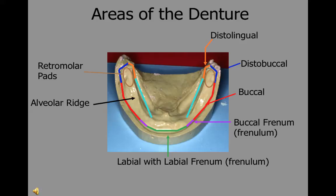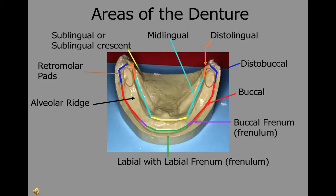The area lingual to the premolar and molar region is called the midlingual area of the denture. And lastly, the area lingual to the six anterior teeth from buccal frenum to buccal frenum is referred to as the sublingual area or the sublingual crescent.